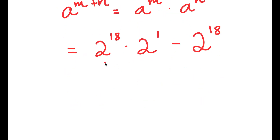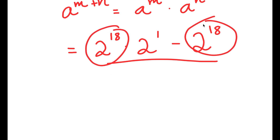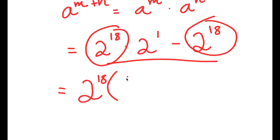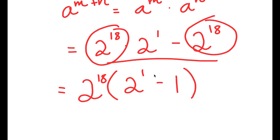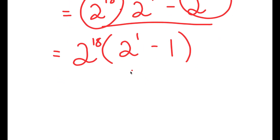From here, because I have two terms that are the same, I can factor out 2 to the power of 18. So I get 2 to the power of 18 times — 2 to the power of 18 times 2 to the power of 1 divided by 2 to the power of 18 is simply 2 to the power of 1, and negative 2 to the power of 18 divided by 2 to the power of 18 is negative 1. So I get 2 to the power of 18 times 2 to the power of 1 minus 1.